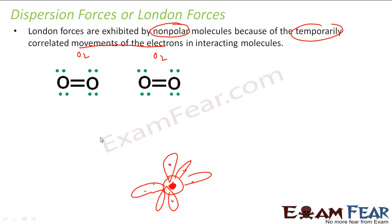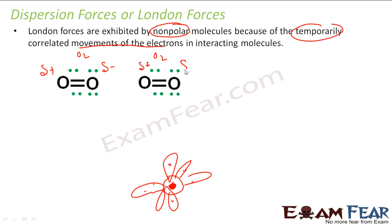Sometimes the electrons spend more time in one direction of the molecule. Since that direction has more electrons, it gets a slightly negative charge, and the other side gets a slightly positive charge. This slight negative charge then repels electrons in the neighboring molecule, pushing them away, so the neighboring region also develops a slight positive charge on one end and a slight negative charge on the other.